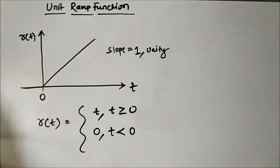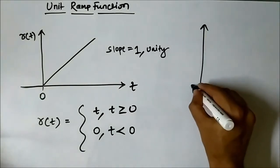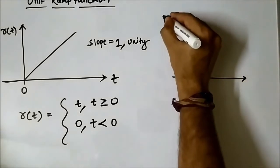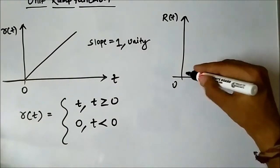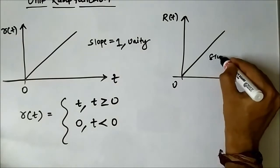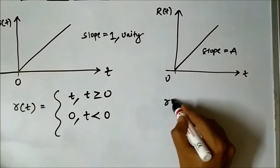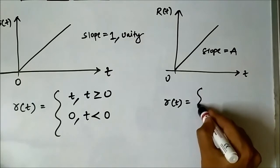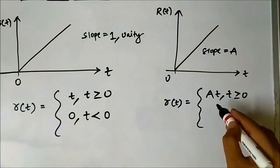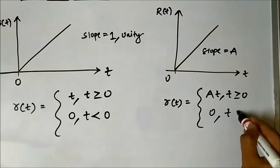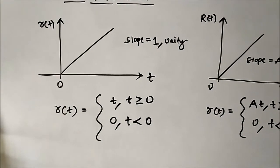In a general ramp function — not a unit ramp — with a slope equal to a, it is represented as R(t) = at for t greater than or equal to 0, and 0 for t less than 0. Here the slope is a, whereas for the unit ramp the slope is 1, which is why it is called the unit ramp function.